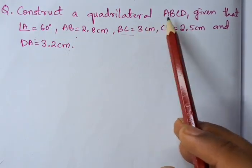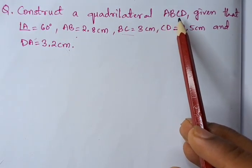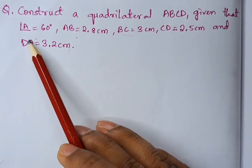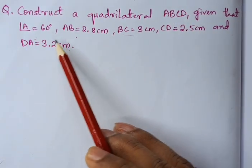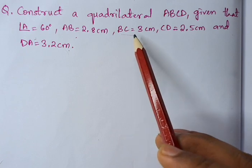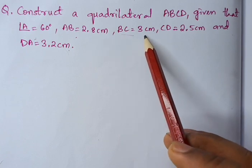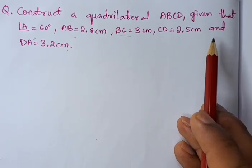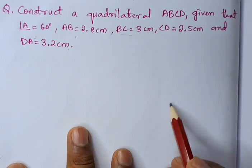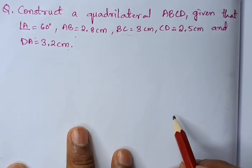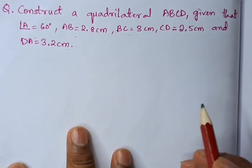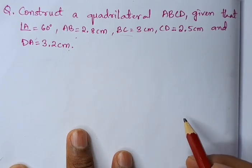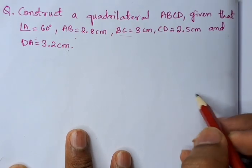Construct a quadrilateral ABCD given that angle A is 60 degrees, AB is 2.8 centimeters, BC is 3 centimeters, CD is 2.5 centimeters, and DA is 3.2 centimeters. We will draw this quadrilateral, and for that, first we will draw a rough diagram.